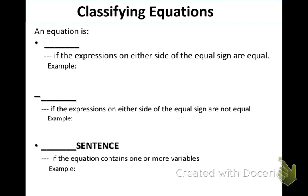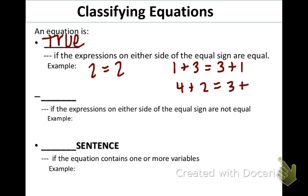There are several different types of equations. The first one is called a true equation. And this happens when the expressions on each side of the equal sign are equal to each other. So it's true. An example of this would be 2 equals 2. Or 1 plus 3 equals 3 plus 1. Or, here's another one, 4 plus 2 equals 3 plus 3. Both sides are equal to 6.